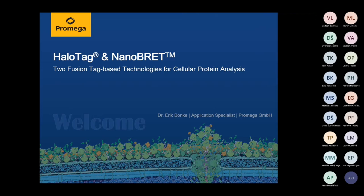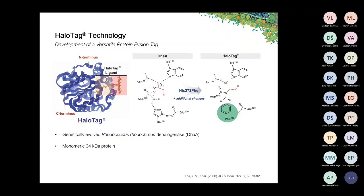Let's start by addressing the question of what HaloTag actually is. It is a 34 kilodalton protein — a genetically evolved prokaryotic dehalogenase from the bacterium Rhodococcus rhodochrous. This enzyme catalyzes the hydrolytic cleavage of carbon-halogen bonds. During this catalytic cycle, a covalent intermediate is formed at the aspartate residue 106, and enzymatic activity is eventually restored by hydrolytic cleavage of this covalent bond, for which histidine residue 272 is indispensable.